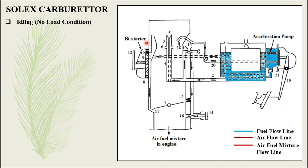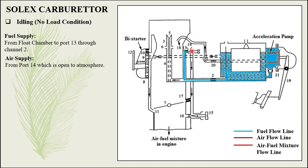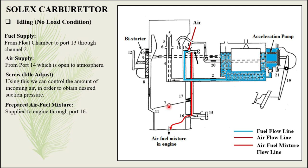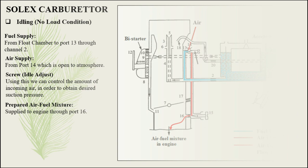Now coming to the second condition: idling. The engine running at no load condition is called idling, and the circuit for idling is different from the previous one. Fuel is supplied from the float chamber to port number 13 through channel 2. Air is supplied to port number 14, which is open to the atmosphere. There is an idle adjust which is used to control the amount of incoming air in order to obtain the desired suction pressure. Once the mixture is prepared, it is supplied to the engine through port number 16, which is also below the throttle valve, so the engine keeps running even without throttle operation.